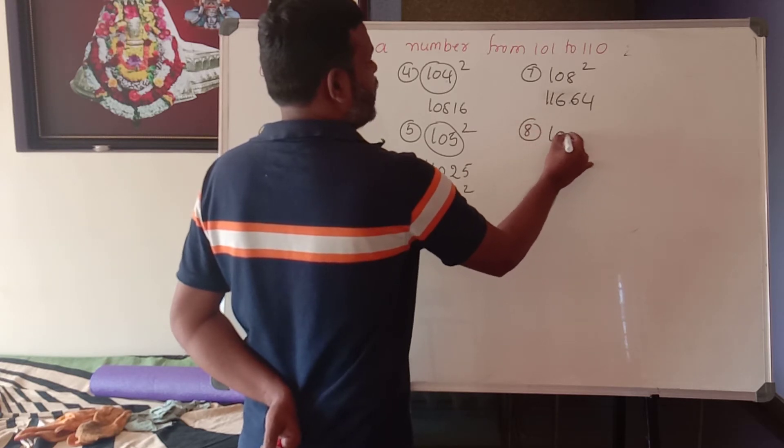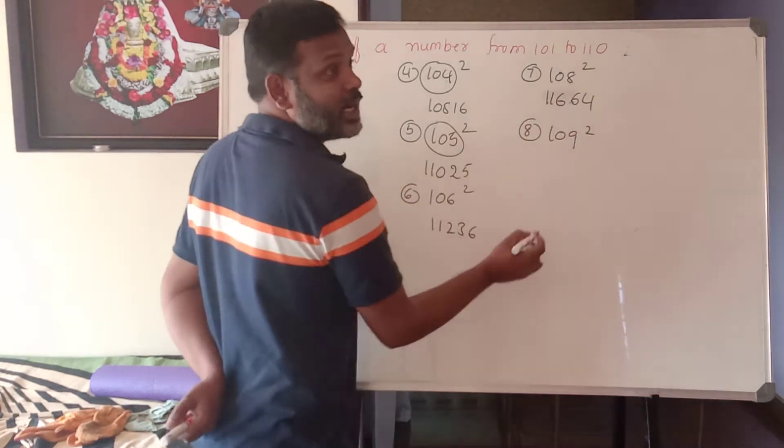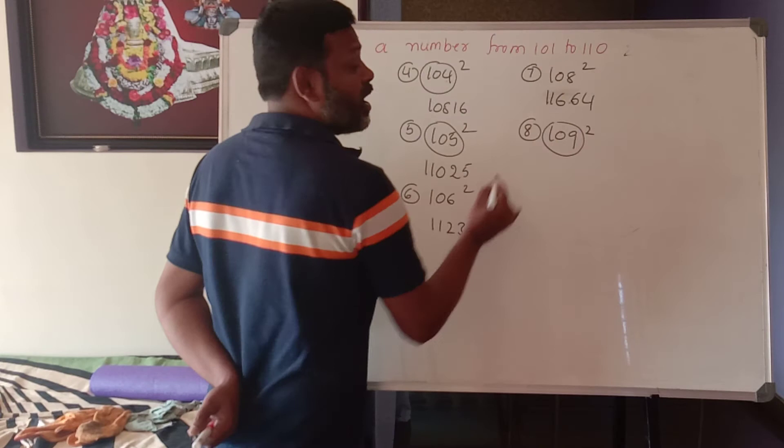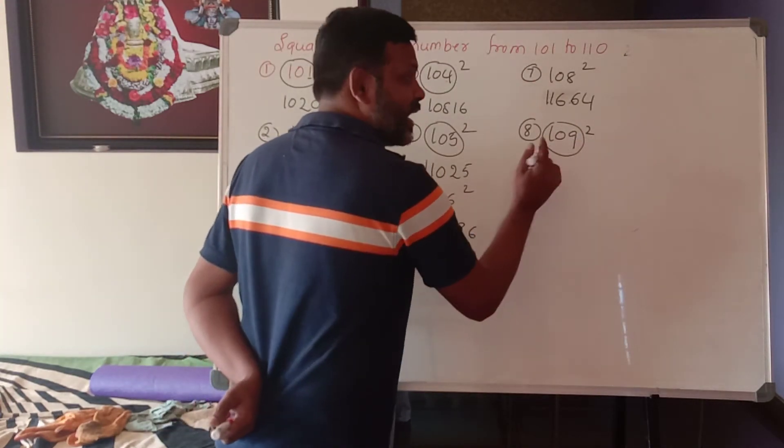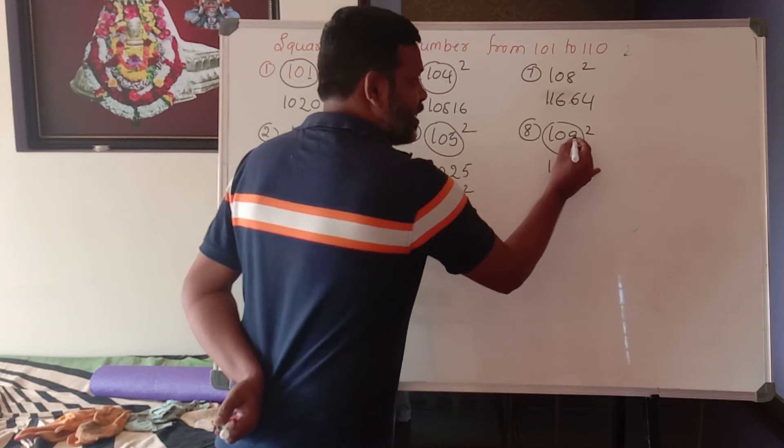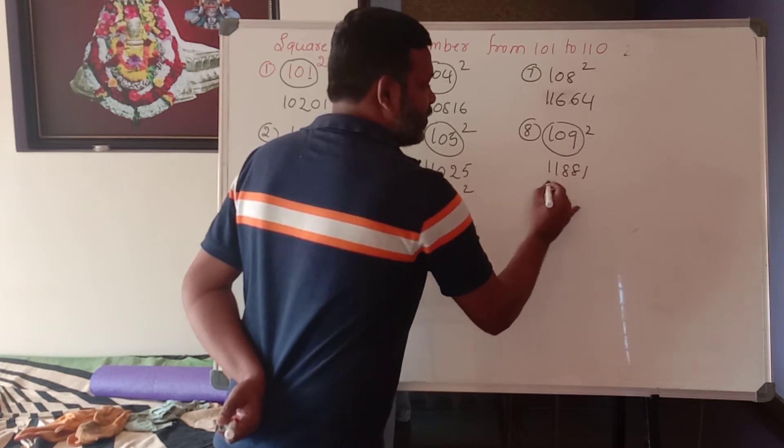Eighth one is 109 square. Given digit 109 plus last digit 9. 109 plus 9, 118. 9 square 81. This is what?